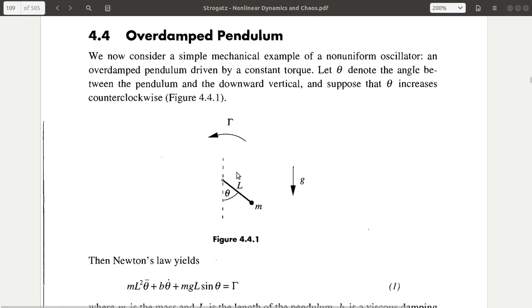Once we draw the free body diagram and if we apply the Newton's law, we will get this equation, where this is the inertial term and this is the viscous term and this is the term which is a torque at this point due to this weight and this is the torque.